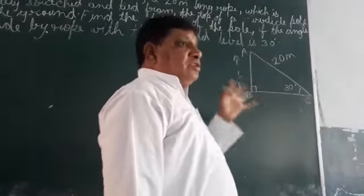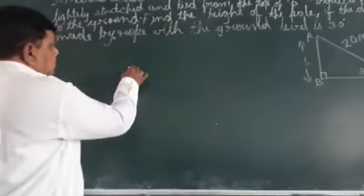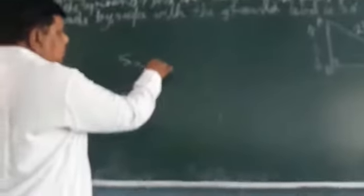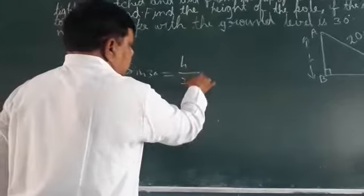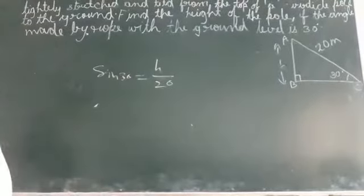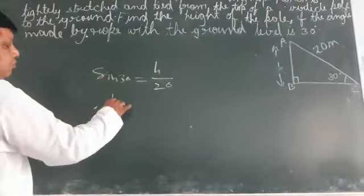So in sine proportion we get sine 30 equals height upon 20. The hypotenuse is 20. So the value of sine 30 is 1 by 2.